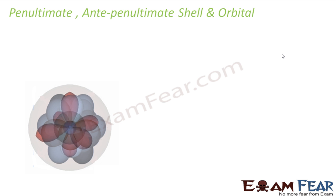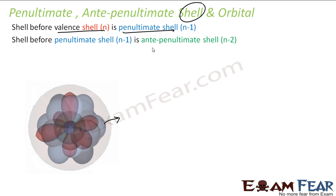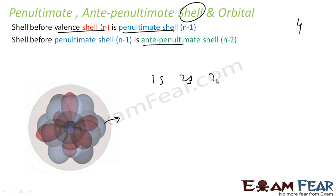We have a term called penultimate and anti-penultimate shell and orbitals that we will use. The penultimate shell is the shell before my final or valence shell. The anti-penultimate shell is the shell before the penultimate shell. So if my final shell is shell 4, the one before it is penultimate and the one before that is anti-penultimate.